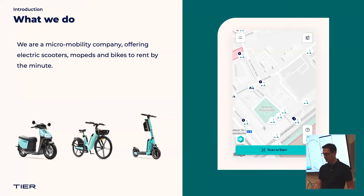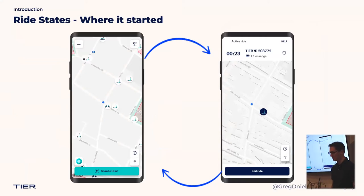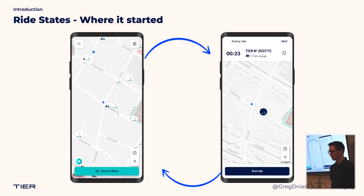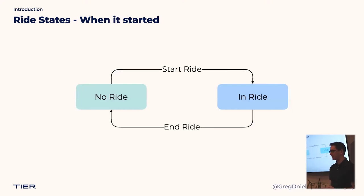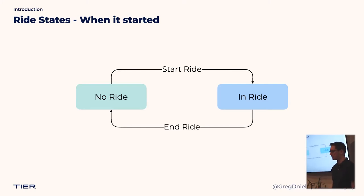At that point the app was super simple — basically we had only two states. The default state on the left where you had no ride: you could browse the map, search for a vehicle and eventually start a ride. Then you'd be transferred to the other state on the right where you interact with only the one vehicle you are renting, and then you could stop the ride and get back to the default state. It was perfectly reasonable to go with a simple solution and not implement anything complex or sophisticated.